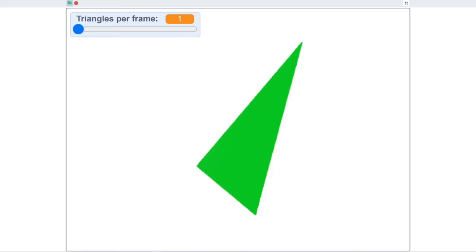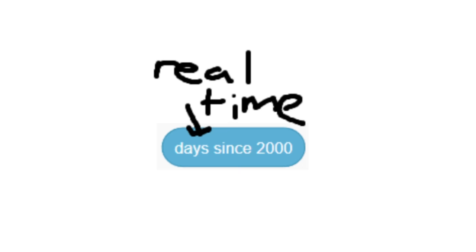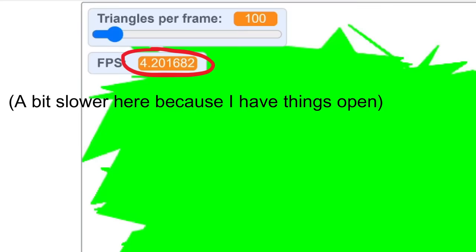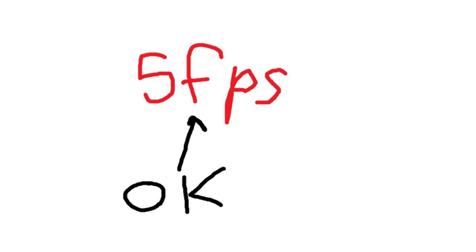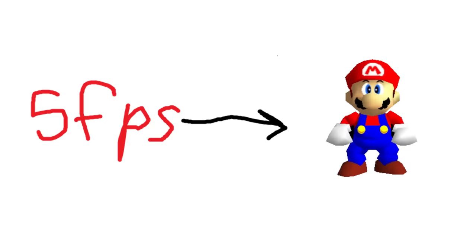The FPS counter uses the days since 2000 variable, which is the most accurate and consistent measure of time in Scratch. Days since 2000 uses real time to determine its value, whereas the timer variable lags with the project. After setting this up, I ran 100 triangles per frame and saw it was running at about 5 FPS. This is perfectly fine. I'm okay with my project running at 5 FPS as long as it works.